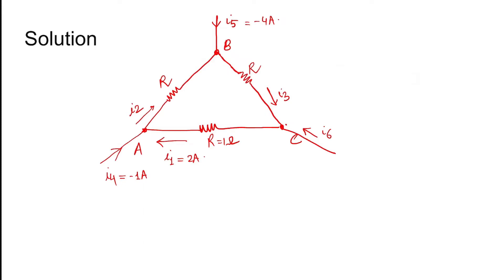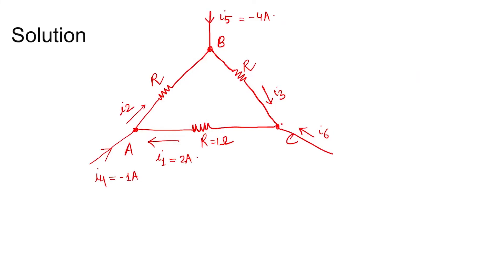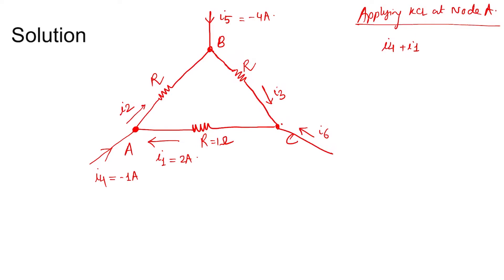Coming to the solution: this is the circuit given and it is part of an electrical circuit. We can see i5 is entering into node B, i4 is entering into node A, and i6 is entering into node C. Applying KCL at node A — at node A, i4 and i1 are entering and i2 is leaving, so i4 plus i1 equals i2, since no excess current should remain at that node.